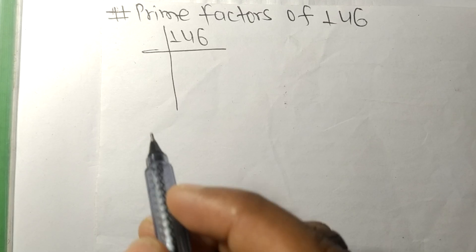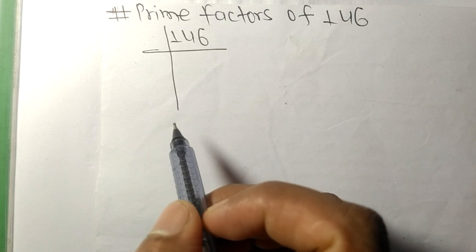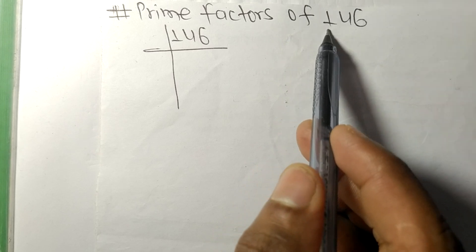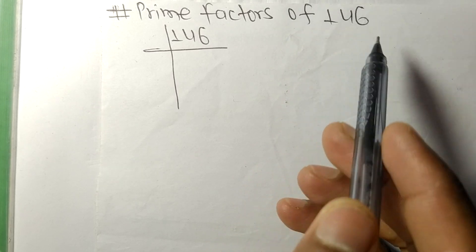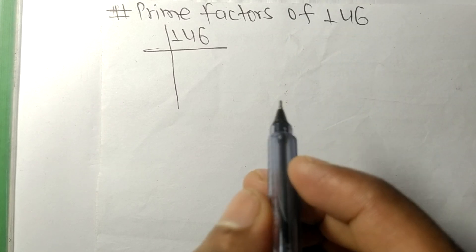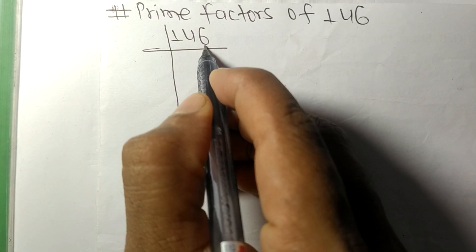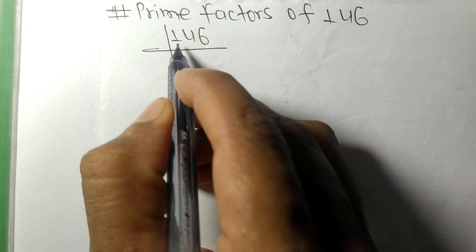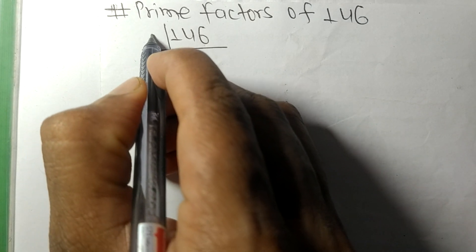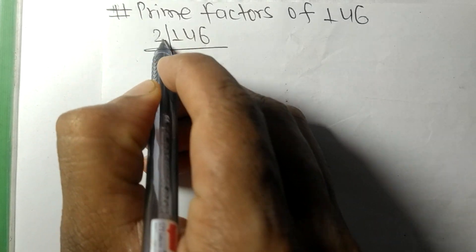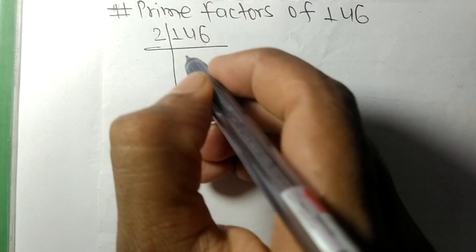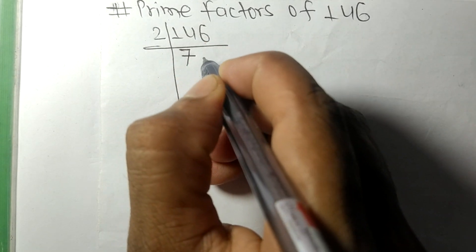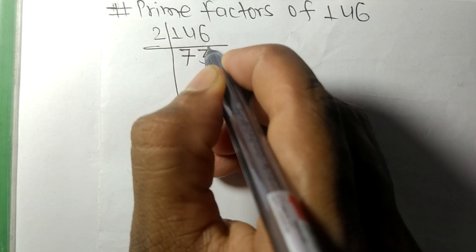Today in this video we shall learn to find the prime factors of 146. Since it contains an even number 6 at the end, this whole number is divisible by 2. So 2 times 7 means 14, and 2 times 3 means 6.